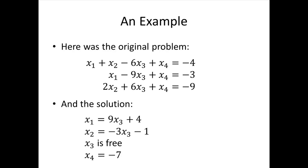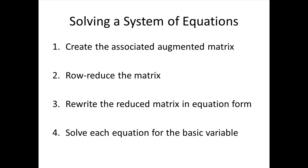Here was the original system of three equations and four variables, and here's how we describe our solution: x1 equals 9x3 plus 4, x2 equals negative 3x3 minus 1, x3 is free, and x4 is negative 7. This shows us that not only is our original system consistent, but it has an infinite number of solutions — one solution for each possible value of x3. The overall process is: write the augmented matrix, row reduce it, rewrite in equation form, solve for each basic variable, and describe the solution.